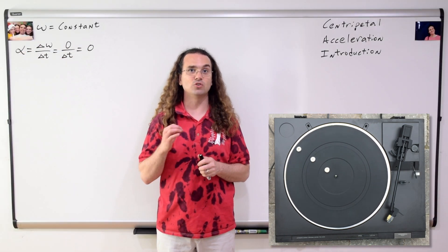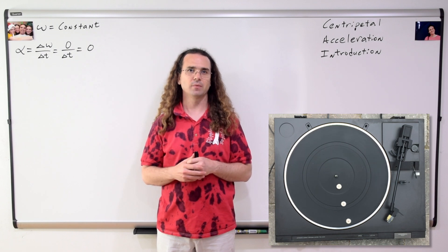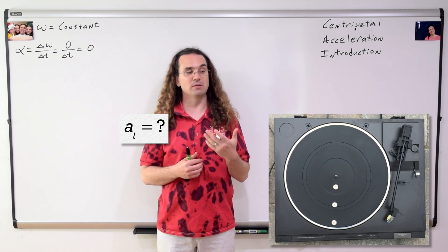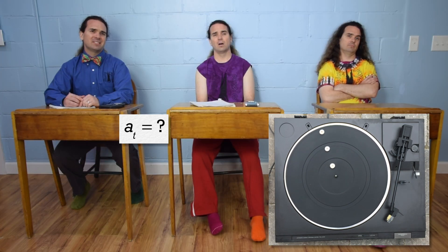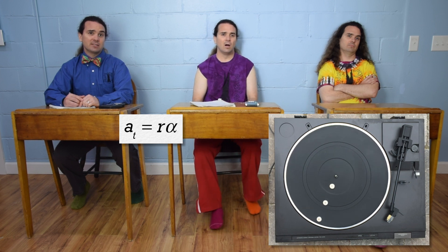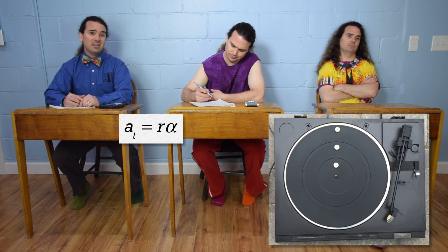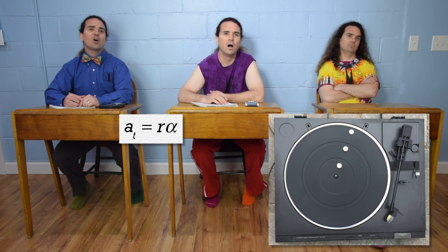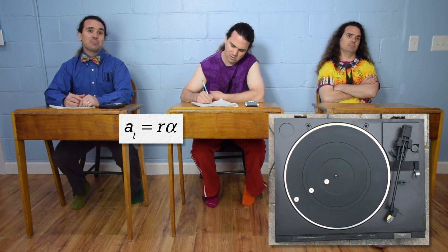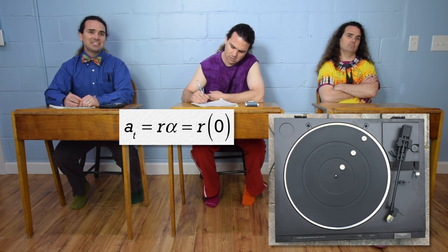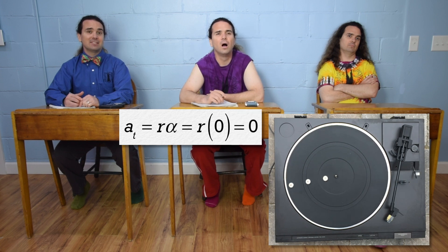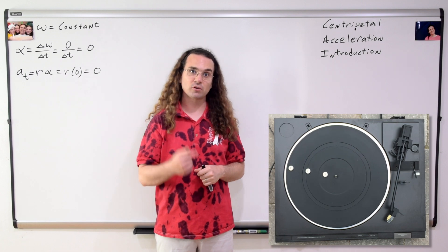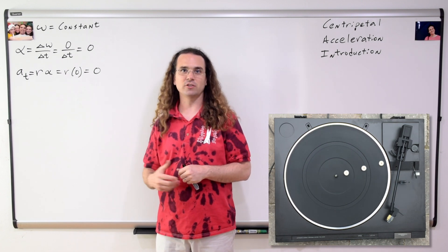Constant angular velocity means zero angular acceleration. Billy, what do we know about the tangential acceleration of all three mints? Tangential acceleration equals radius times angular acceleration, and the radius of the path of each mint is different. But the radius does not matter because the angular acceleration is zero, so the tangential acceleration of all three mints is zero. Absolutely. Constant angular velocity means zero angular acceleration, which means zero tangential acceleration.